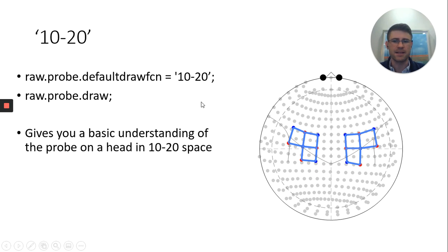Well, you can select the 10-20 option, which would be raw.probe.defaultDrawFunction, and you write in 10-20 in apostrophes. And then you go ahead and draw it, raw.probe.draw. You get something like this, and you get this kind of looks like a shrimp to me, where you have little black eyes near the nose, you have the EEG coordinates, 10-20 coordinates, and then you have the probe laid out. You can see it's not perfect on that, but it's within reason. This gives you a basic understanding of the probe on the head in the 10-20 space.